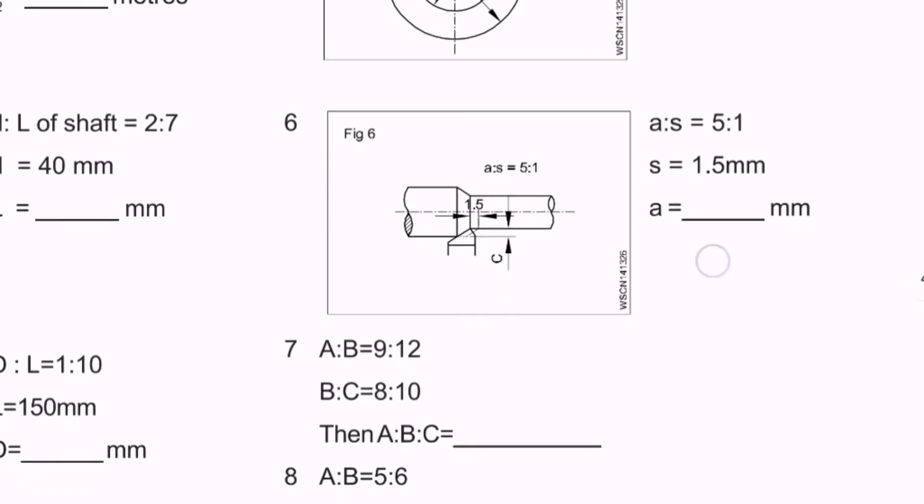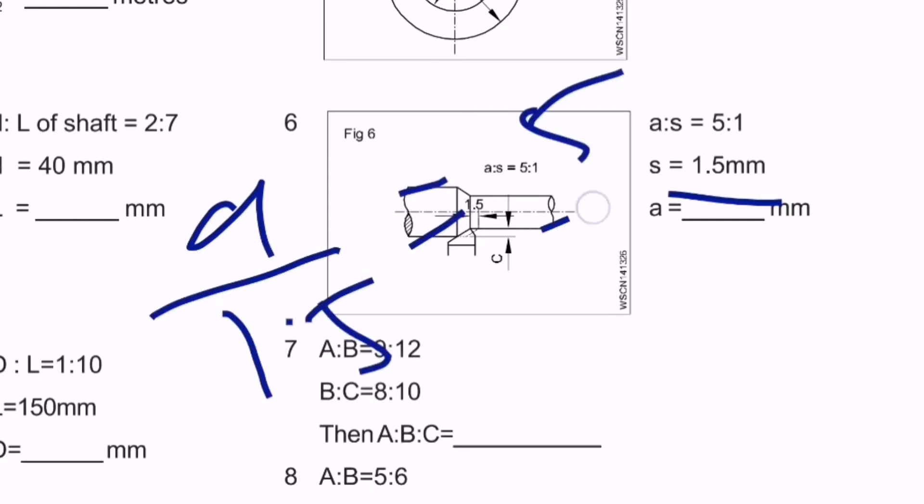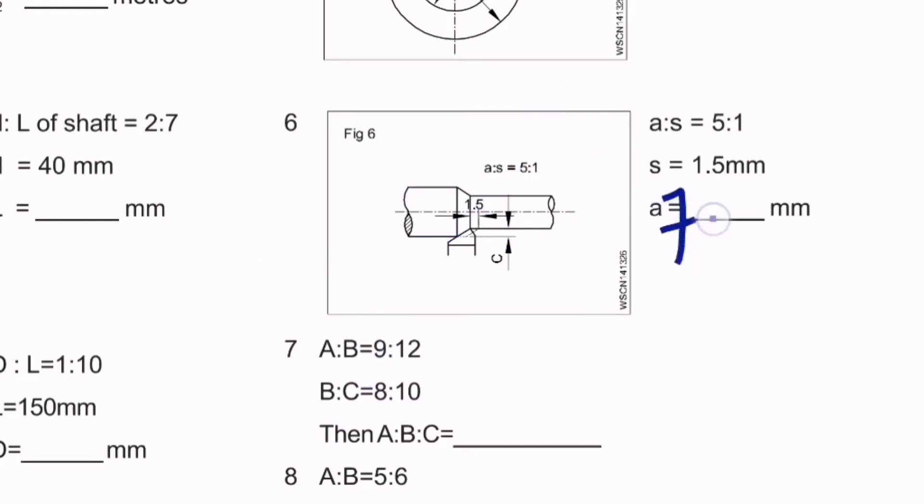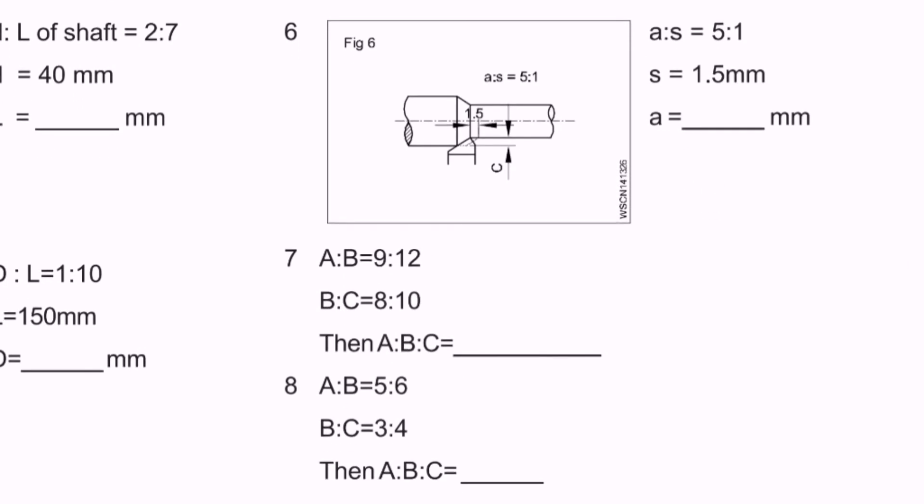Question number six: a:s equals 5:1, and s value is 1.5mm. So a/1.5 equals 5/1. Cross multiply: 5 times 1.5 equals 7.5. The answer is 7.5mm. Don't forget the unit - if you miss the unit, the answer is completely wrong.